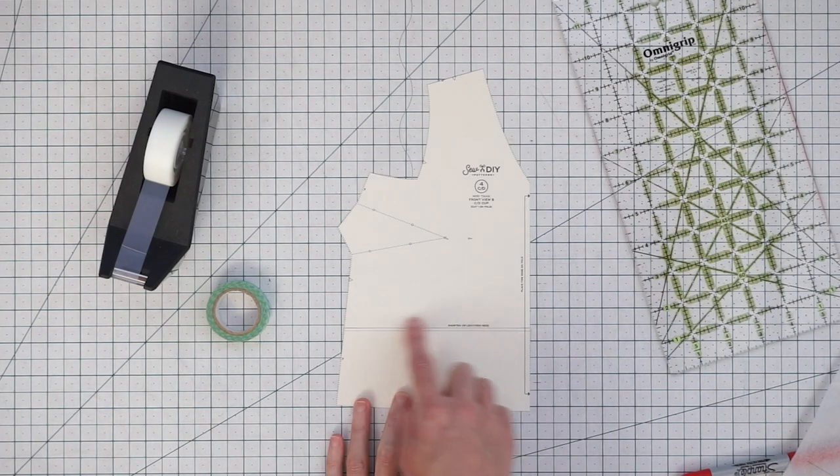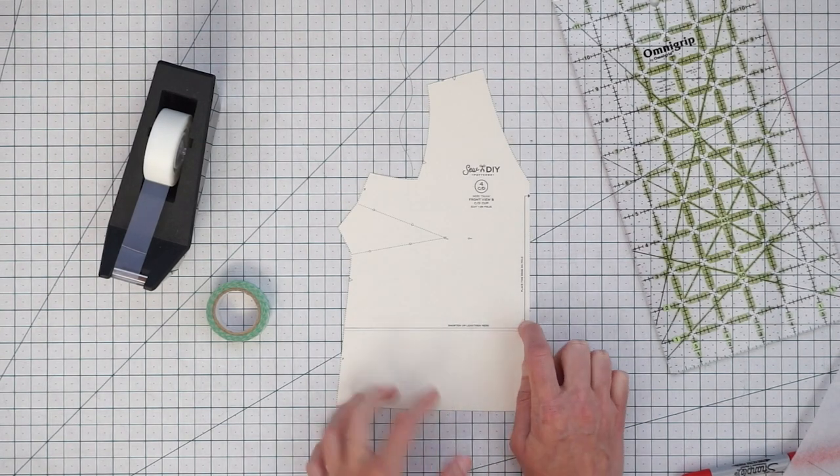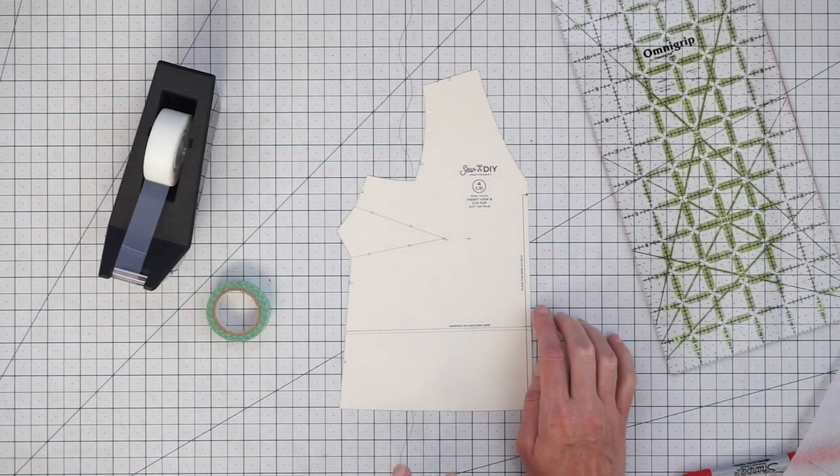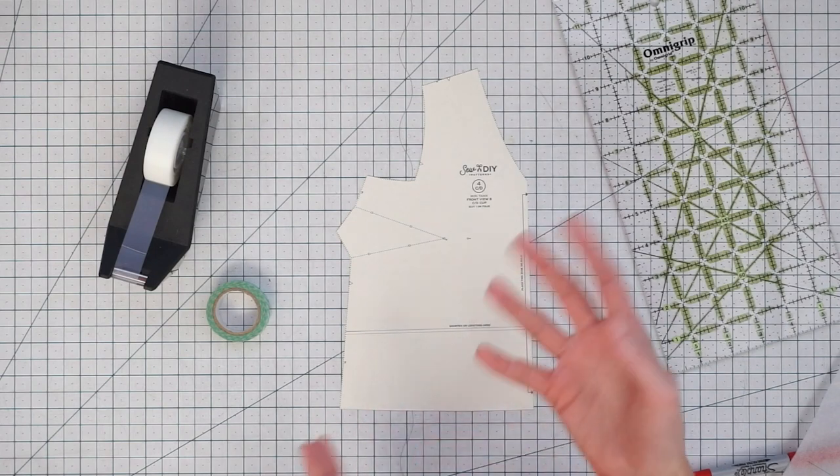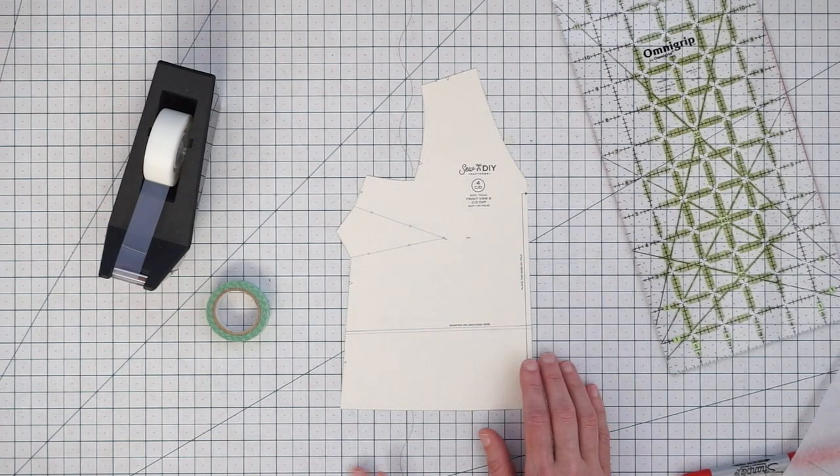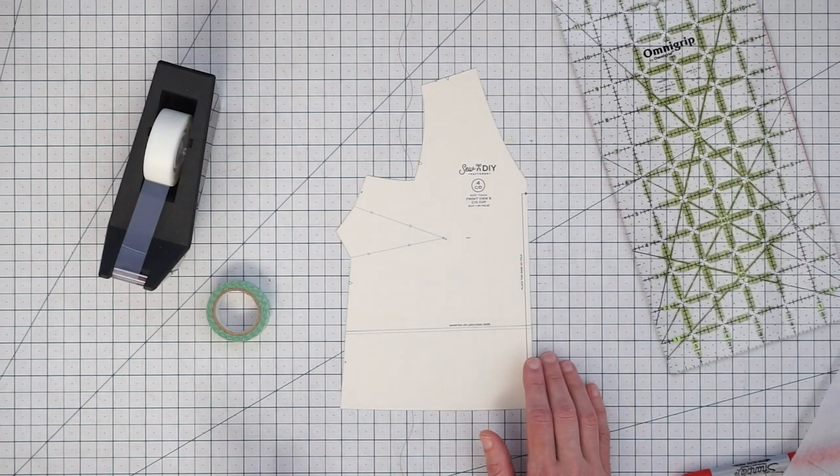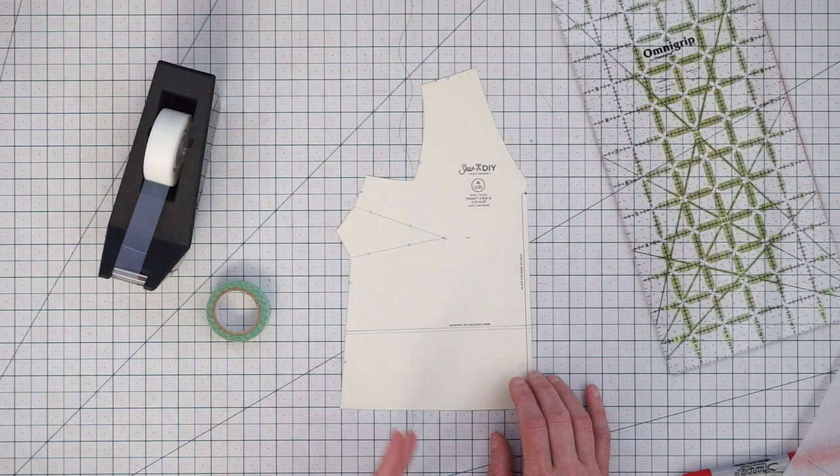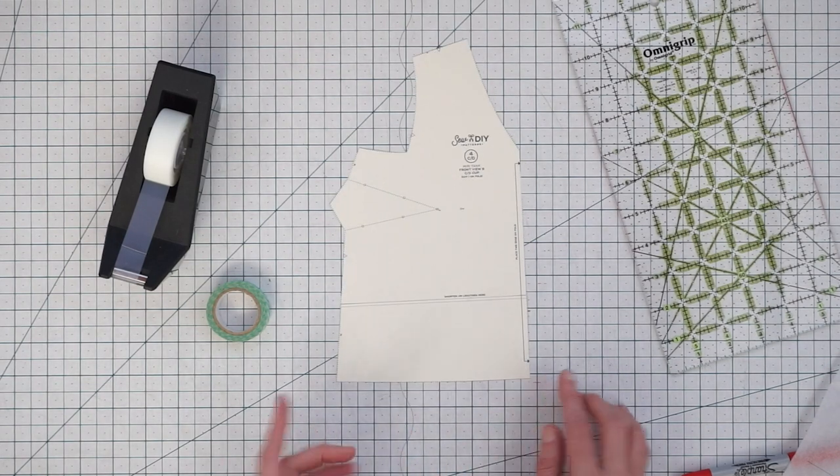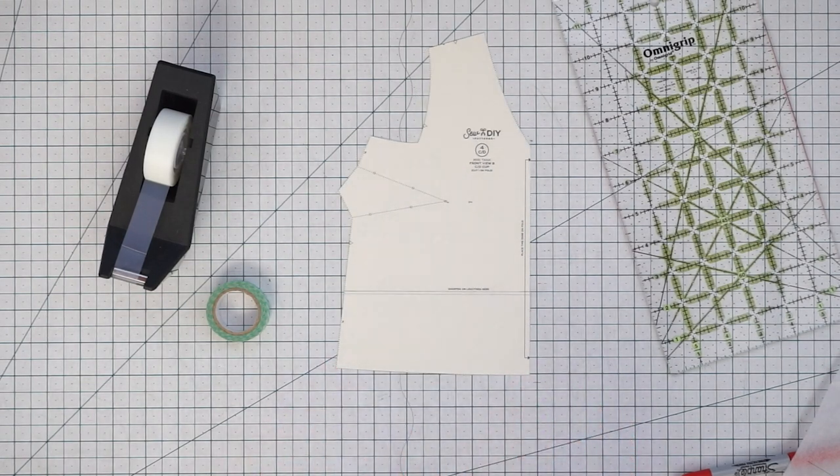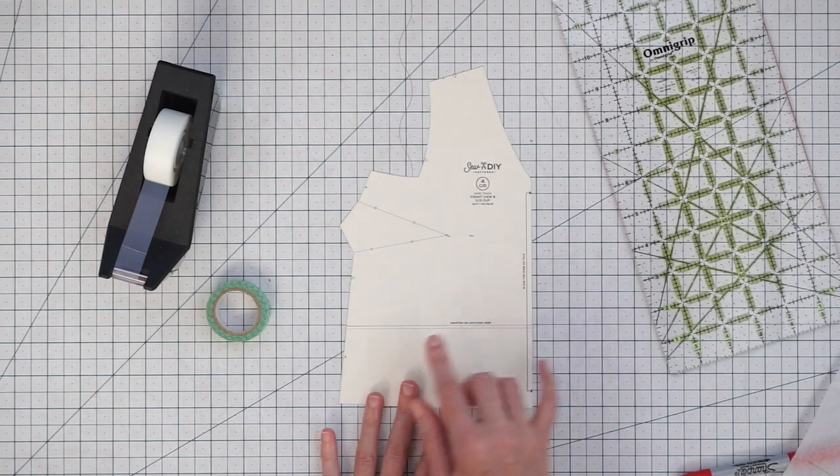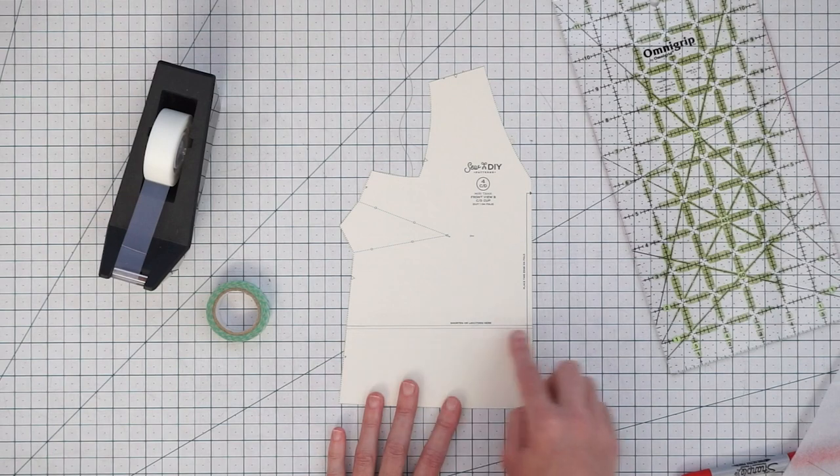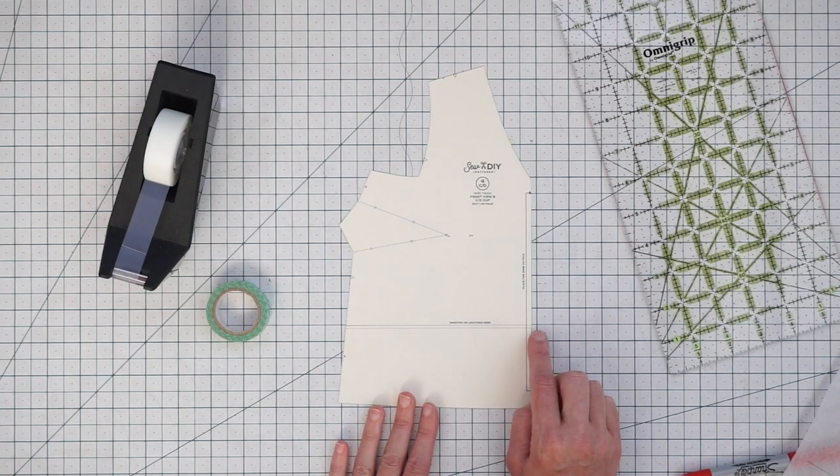In general we want to use our lengthen and shorten line because that's going to ensure that our length adjustment doesn't affect any of the width that was built into the pattern. Now if you're really making a very big adjustment and you're wanting to turn your top into a dress then you really might want to just extend from the bottom. But if you want to make sure that the only change that you make is to the length then I recommend using your lengthen and shorten lines.